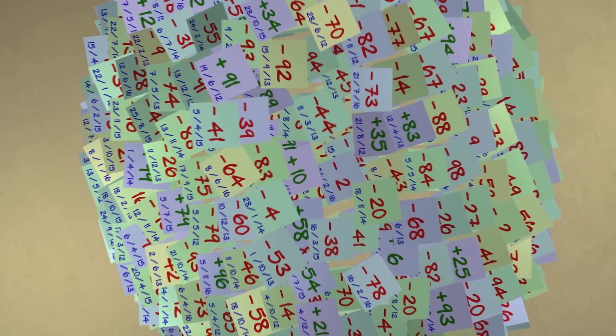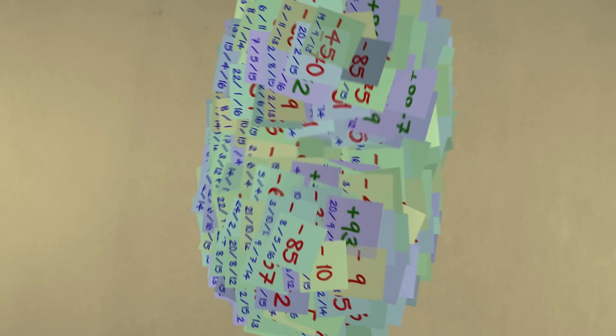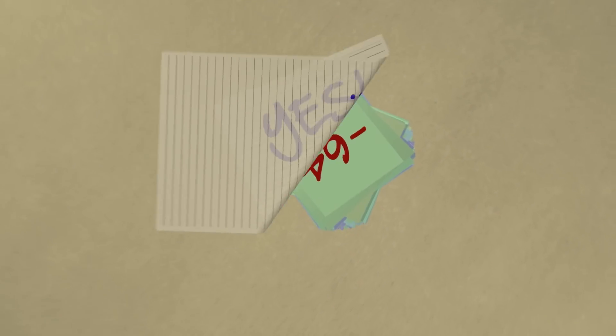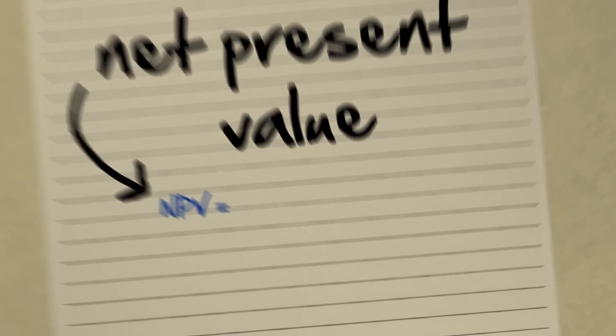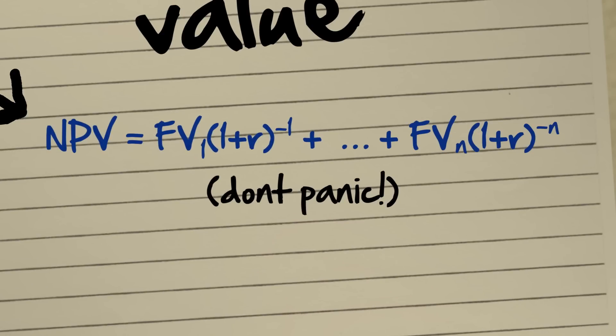Can we have just one combined Present Value for all of them? Yes, this is called Net Present Value. We can calculate it using the Net Present Value formula.